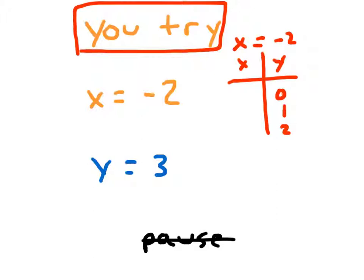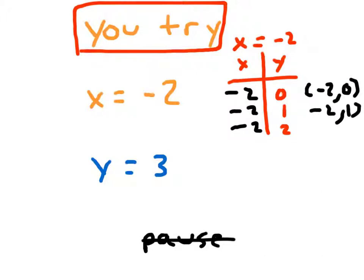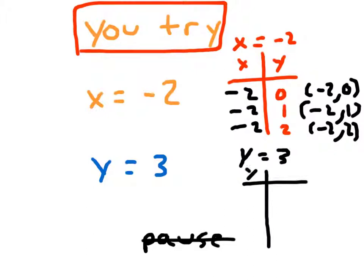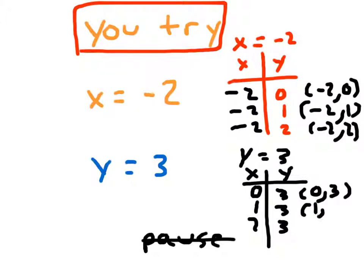Returning from that pause — any of those x values should have been negative 2. So the ordered pairs are: (-2, 0), (-2, 1), and (-2, 2), which you should have plotted for x equals negative 2. For y equals 3, we would do something very similar. Write your equation above your function table; this time we choose values of x. You might have chosen different values than I did. I have the points (0, 3), (1, 3), (2, 3) — your points may vary. However, all of your y-coordinates should be 3.